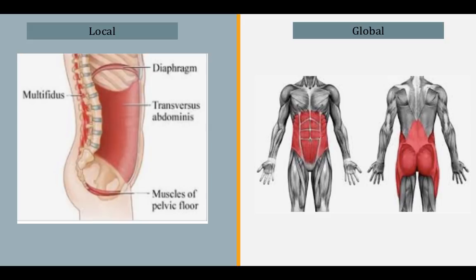The global muscles are the obliques, rectus abdominis, gluteals, latissimus dorsi, quadratus lumborum, and paraspinals. They are made up of mostly type 2 fibers. Their contractions are phasic, and their action is dependent on the direction of force. In pain states, they tend to overfire.